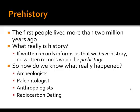Historians who put these pieces together rely a lot on scientists. There are three types of scientists that really help in this process: archaeologists, paleontologists, and anthropologists. And for determining the age of things, we use this process called radiocarbon dating. We're going to take a look at what each of these scientists does.